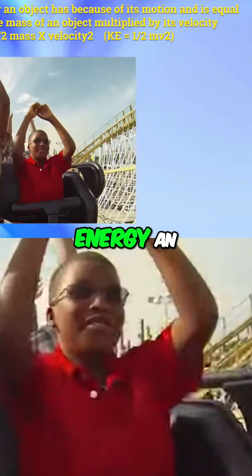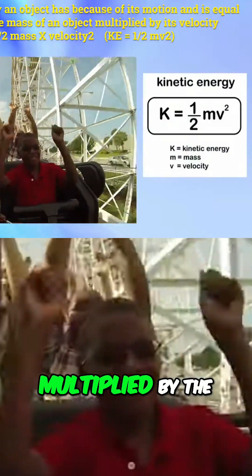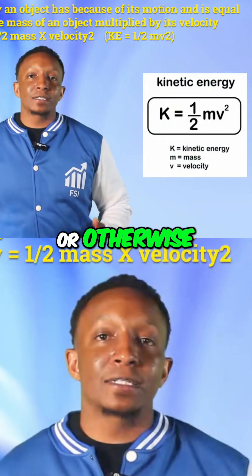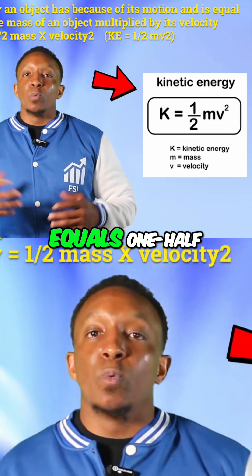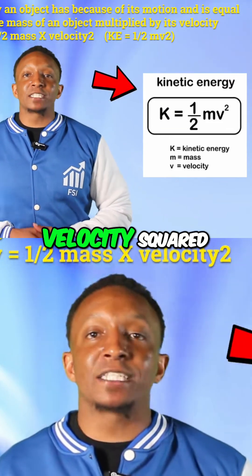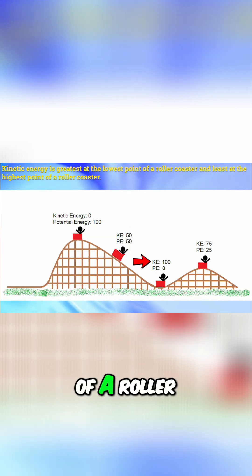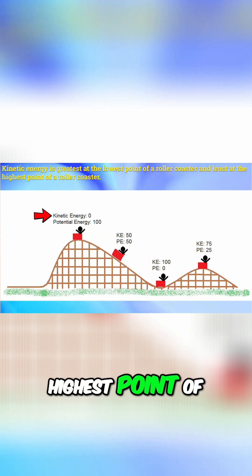Kinetic energy is the energy an object has because of its motion and is equal to one-half multiplied by the mass of an object multiplied by its velocity squared. Or otherwise, kinetic energy equals one-half of the mass times velocity squared. Kinetic energy is greatest at the lowest point of a roller coaster and least at the highest point of a roller coaster.